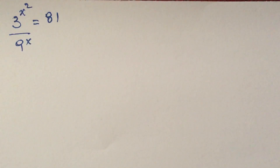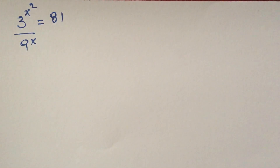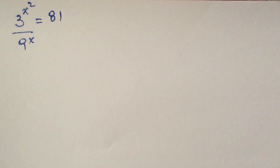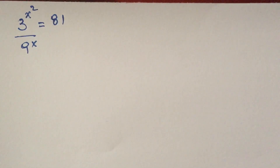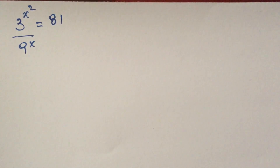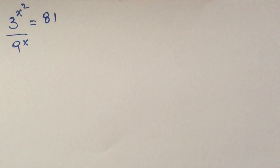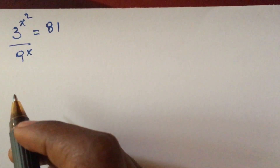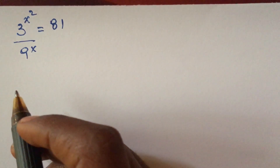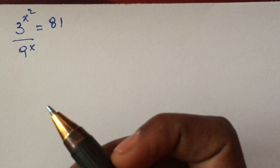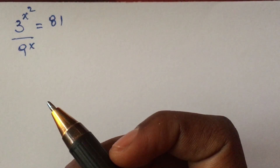Given the exponential equation: 3 to the power of x squared over 9 to the power of x equals 81. How do we solve this exponential equation?